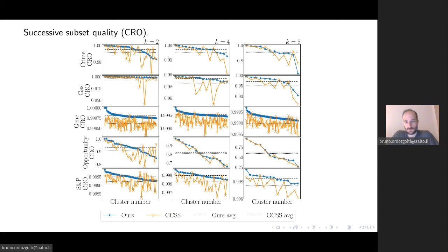And we show that our method is much more stable than the alternatives. In some cases the CRO of the subsets found by the alternatives are actually quite high as well, but the numbers themselves are not so important as this might depend on the distribution of the data. So what's important is which method is better and which method is more stable.